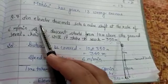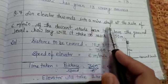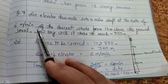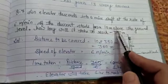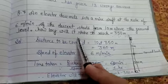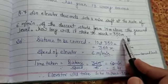Question number 7. An elevator descends into a mine shaft at a rate of 6 meters per minute. If the descent starts from 10 meters above the ground level, how long will it take to reach minus 350 meters?